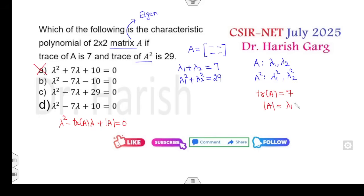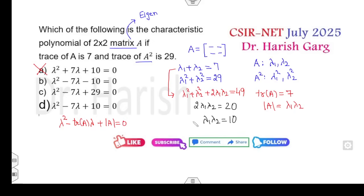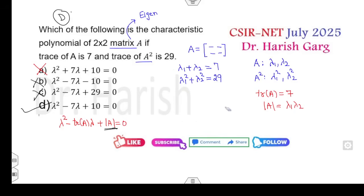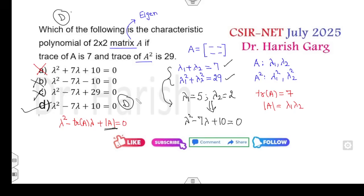The determinant is the product of the eigenvalues. Using (λ₁ + λ₂)² = λ₁² + λ₂² + 2λ₁λ₂, we get 49 = 29 + 2λ₁λ₂, so λ₁λ₂ = 10. The determinant is 10, making option D the correct answer. Alternatively, you can find λ₁ = 5 and λ₂ = 2 directly since 5 + 2 = 7 and 25 + 4 = 29, confirming option D is the right answer.